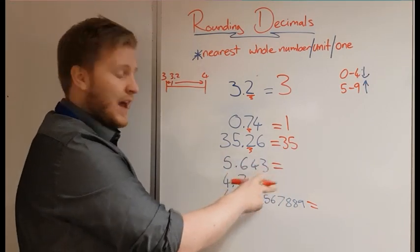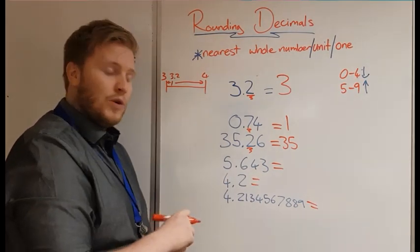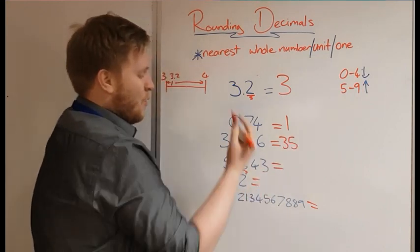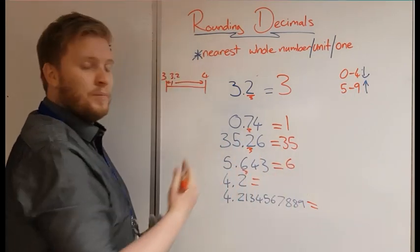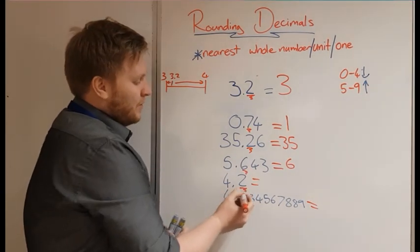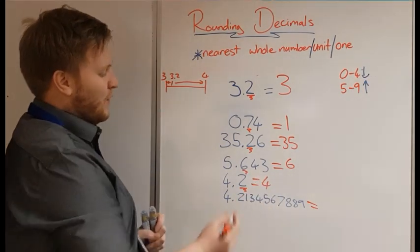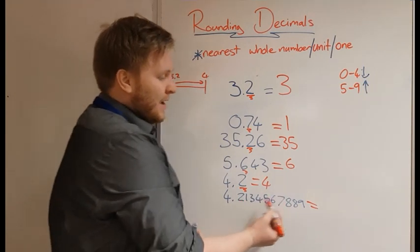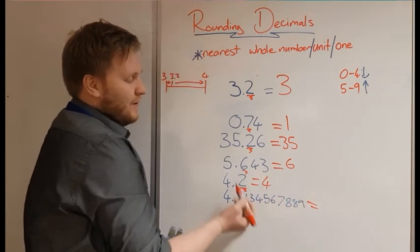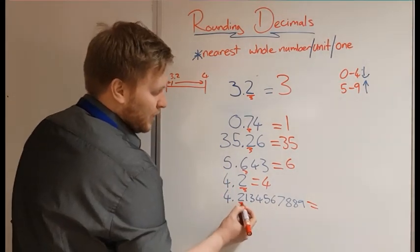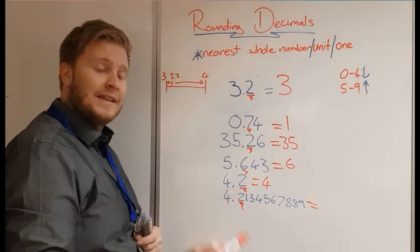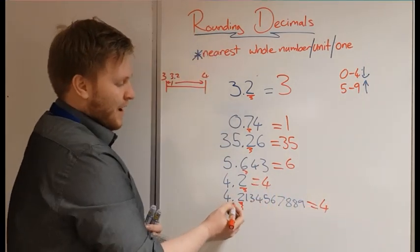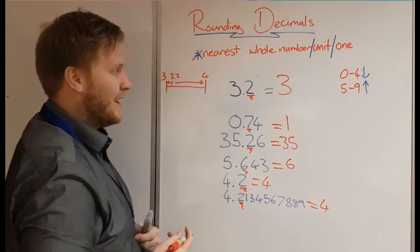This number has three decimal places — tenths, hundredths, thousandths — but again we only look at our tenths column. It's a 6, between 5 and 9, so we round up. To compare: 4.2 and 4.2134567889 — although the second one looks much scarier, we do exactly the same thing. We look at the tenths column, see a 2, and round down to 4. Both answers are the same because both have the same whole number and the same tenths digit.